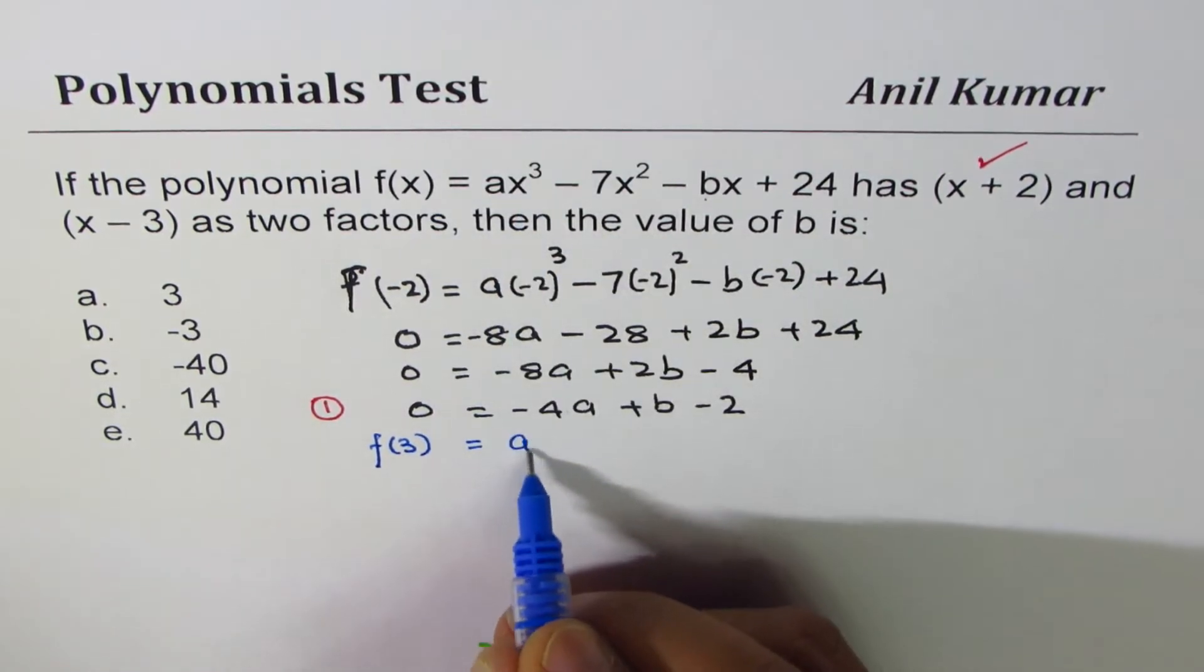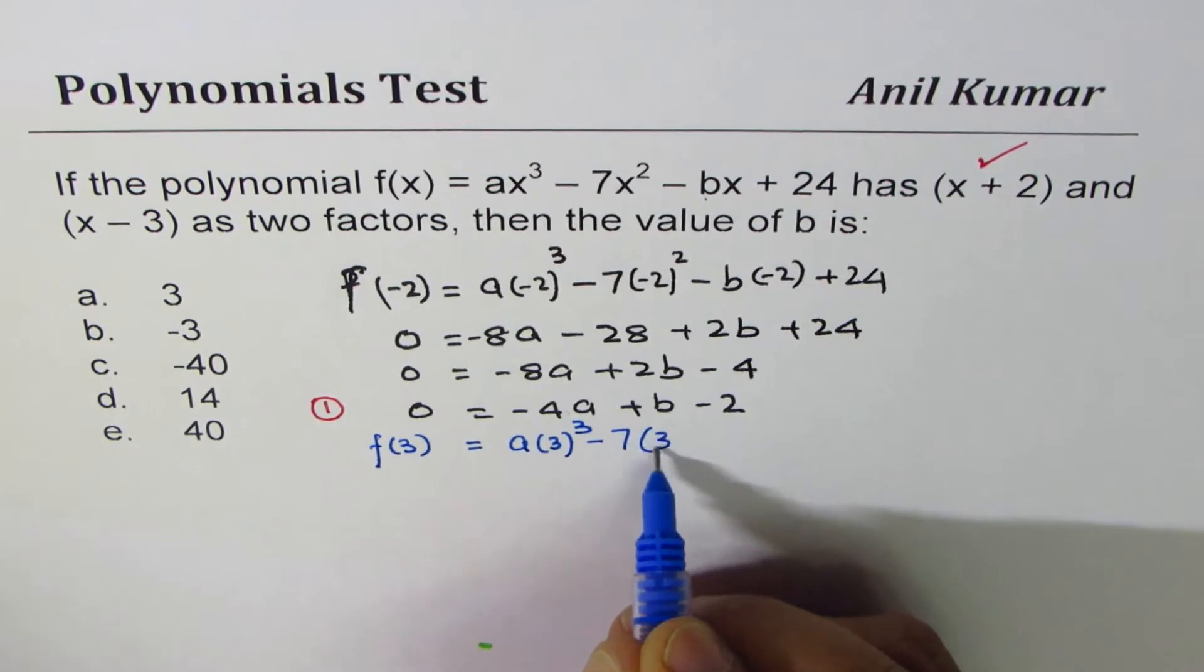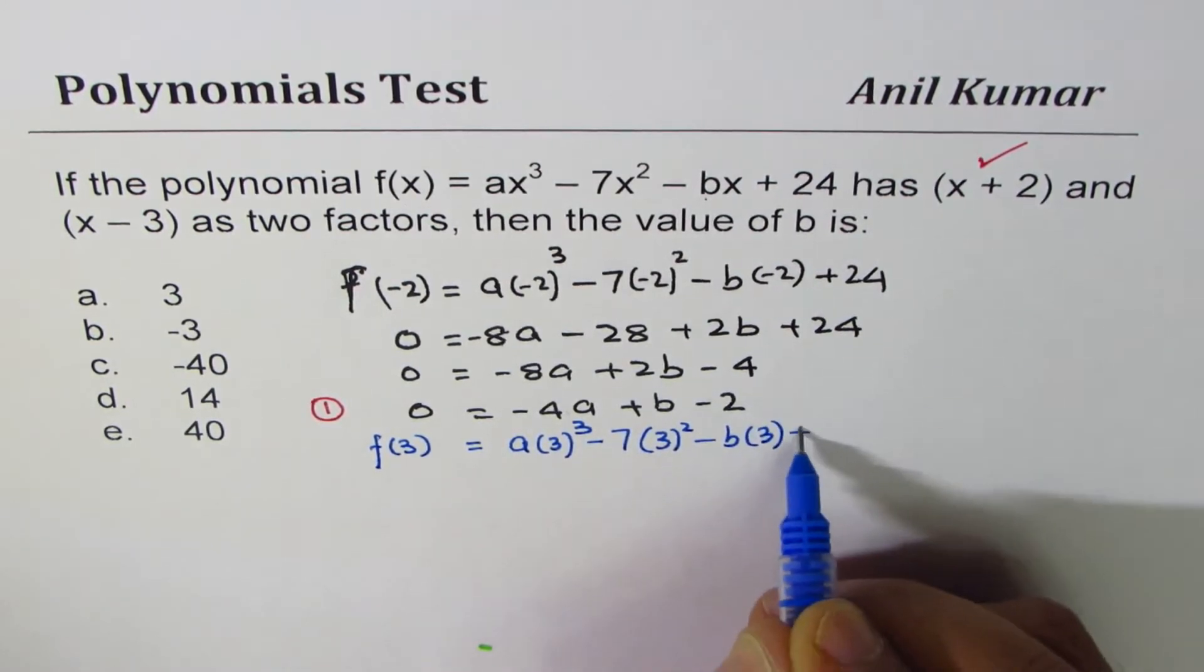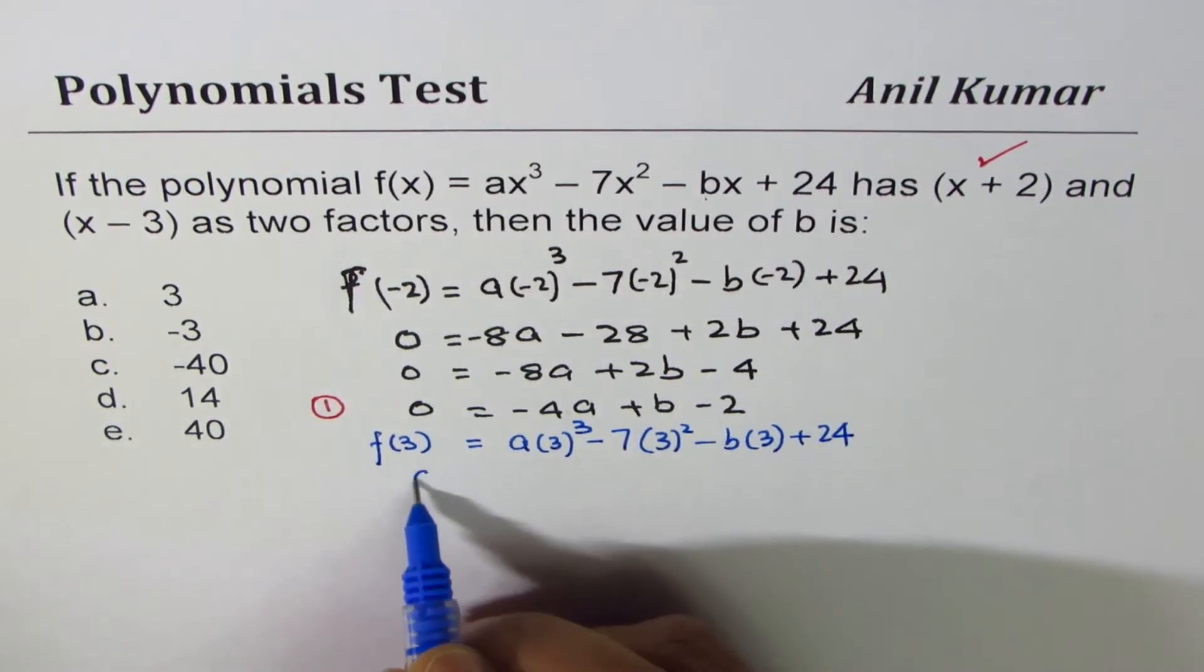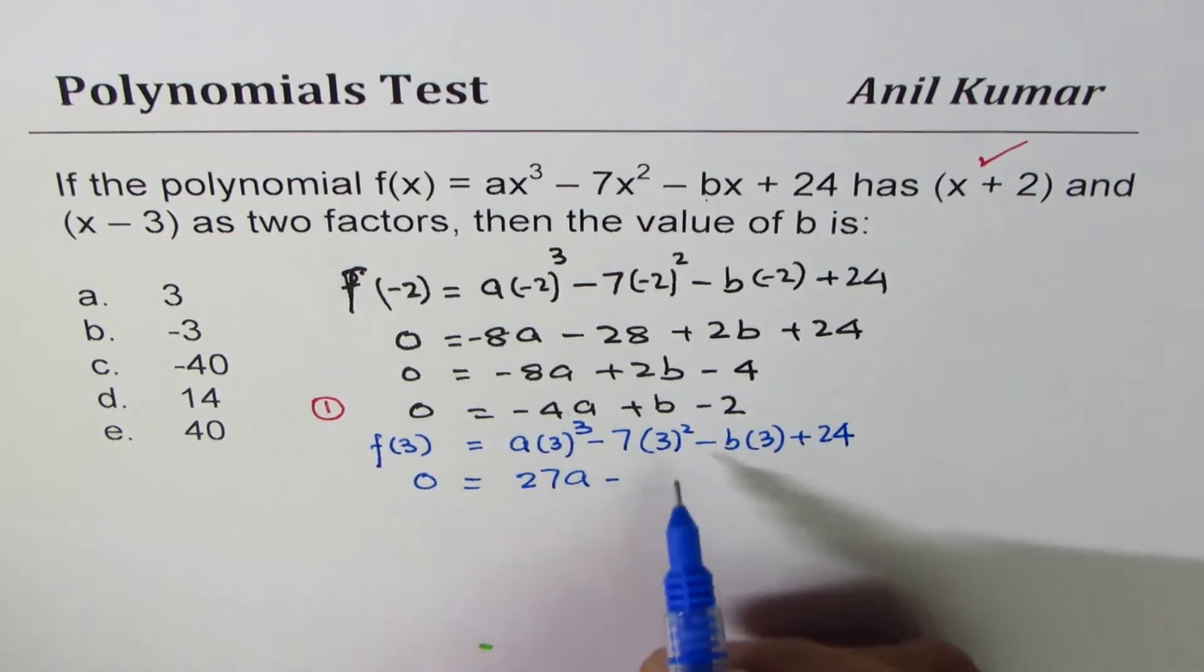should also be 0. So, if I substitute 3 here, I get a(3)³ - 7(3)² - b(3) + 24,